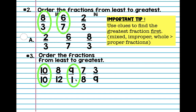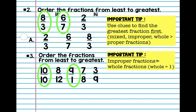Let's compare these two. We know that ten over ten is a whole number, so it equals one. Improper fractions will always be greater than whole fractions, because whole fractions just equal one. If this is one, and this is nine over one — anything over one is just that number. So nine over one is really just nine, which makes it our greatest fraction. And this one is clearly the second one.